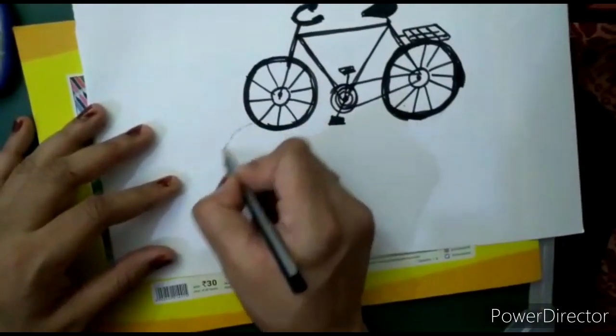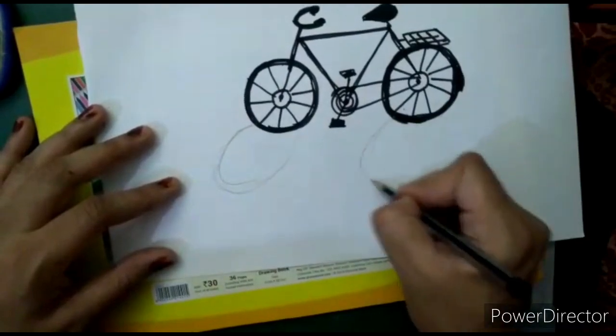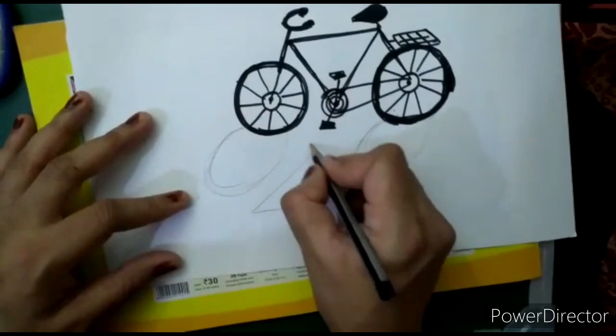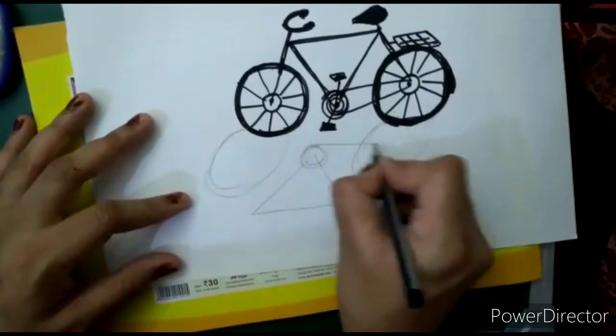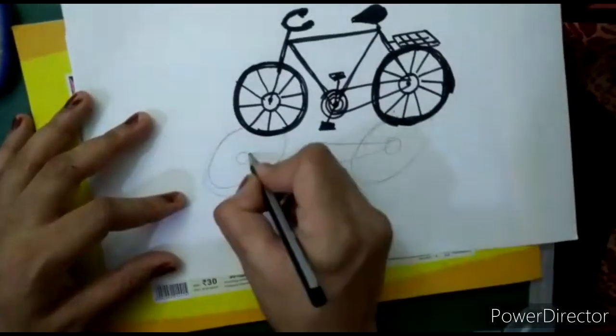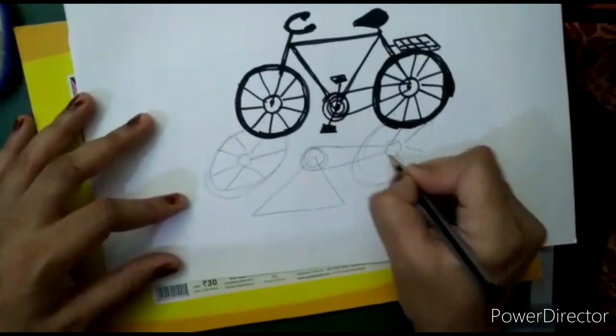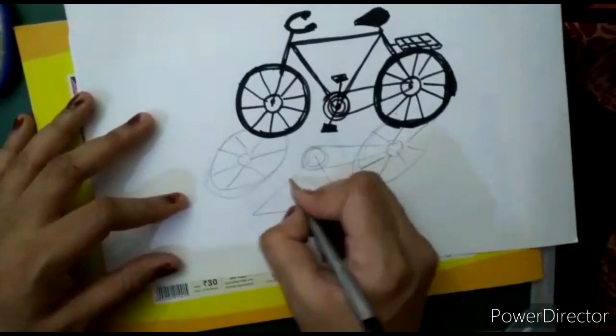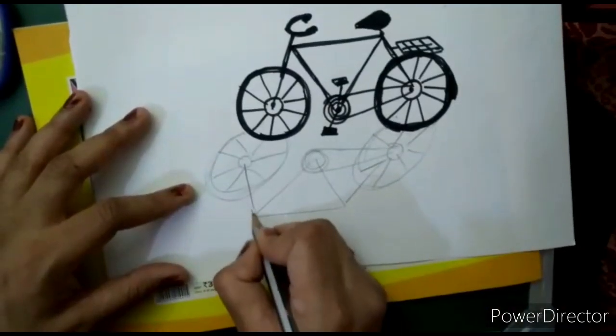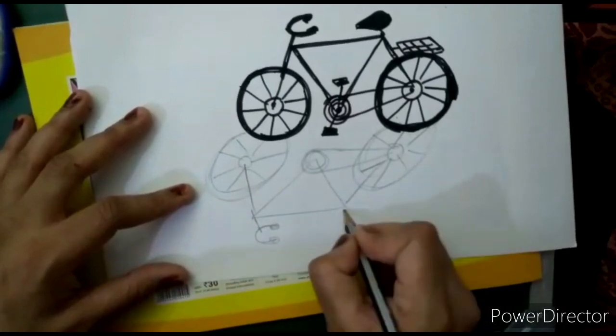So we will draw an oval shape in the slanting line here and here. Similarly, draw a triangle, then draw a circle and draw the shape of cycle like this. Then join these lines, draw a handle here and draw a seat part here.